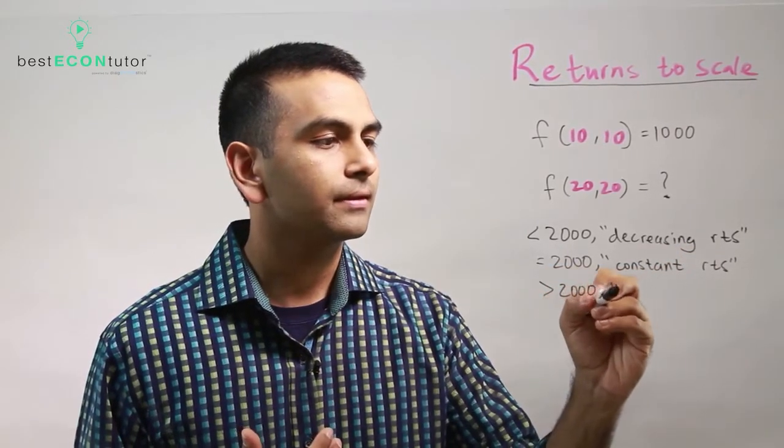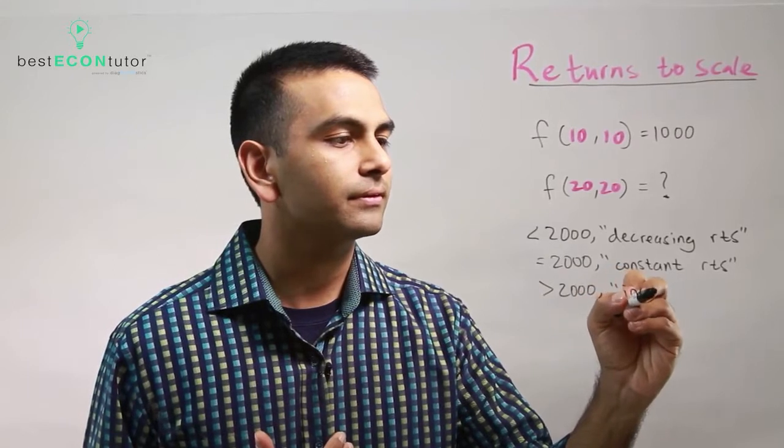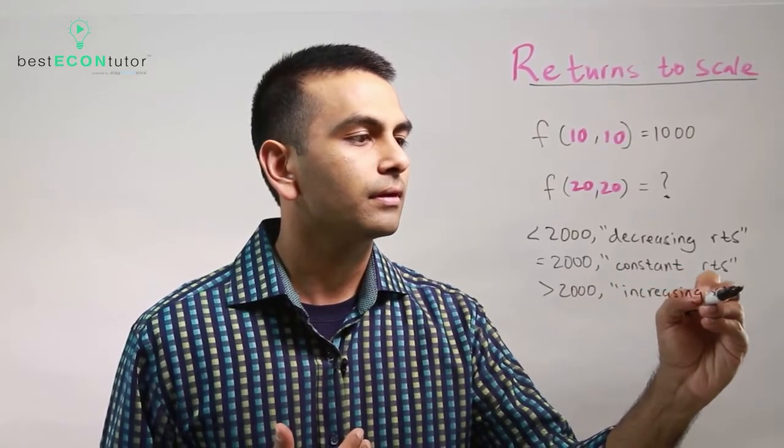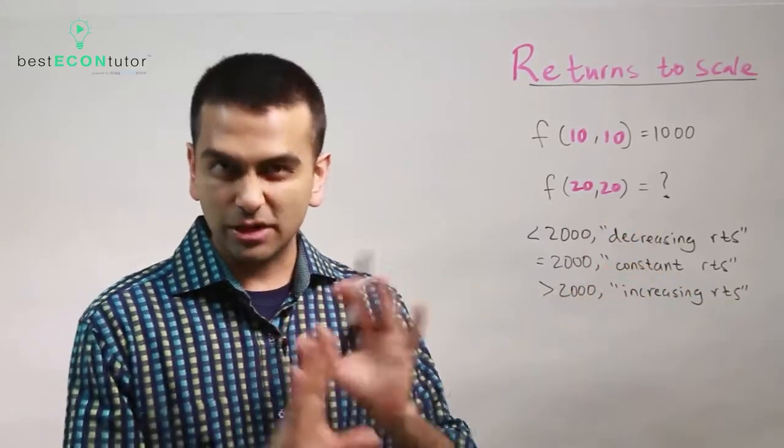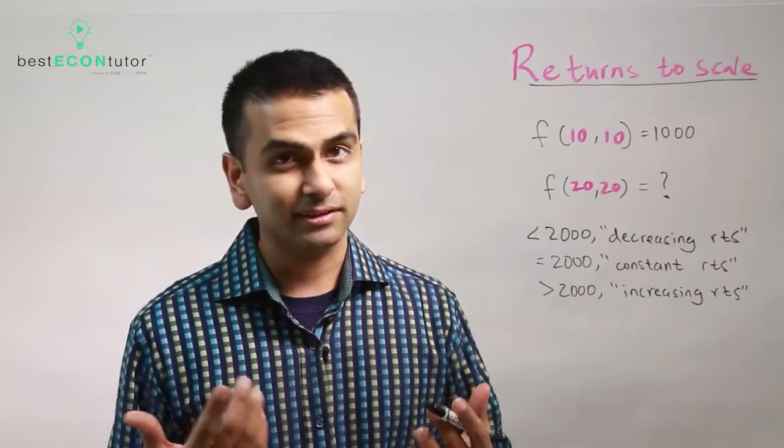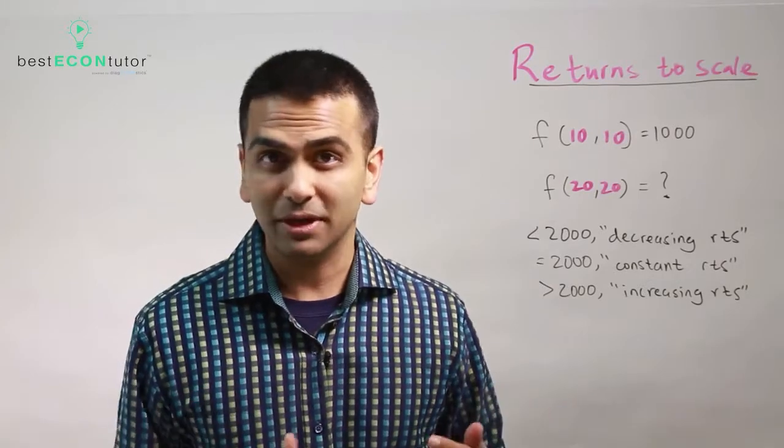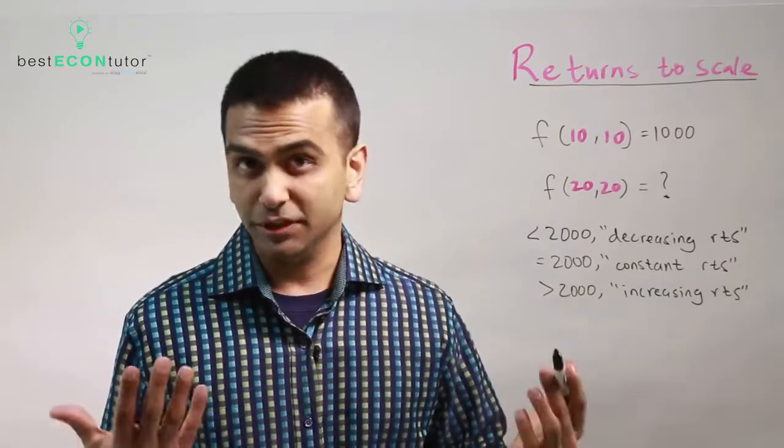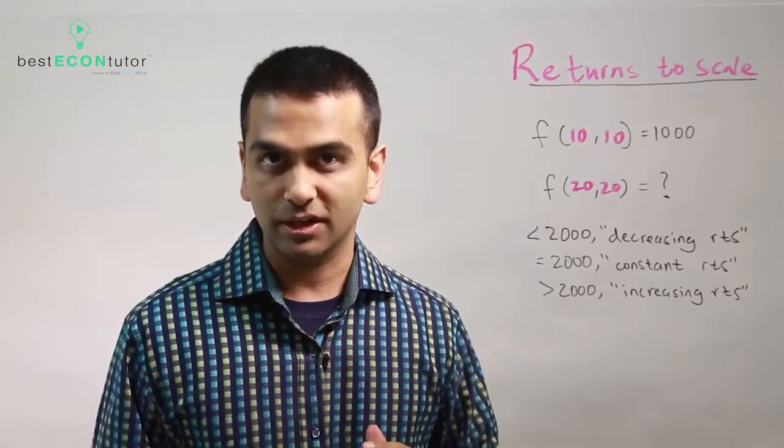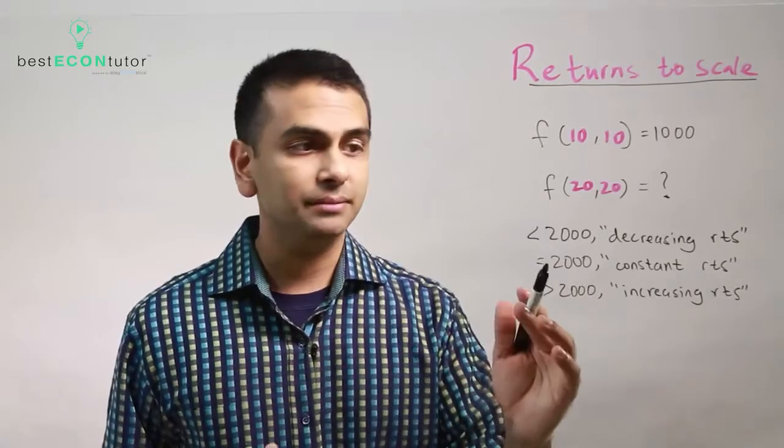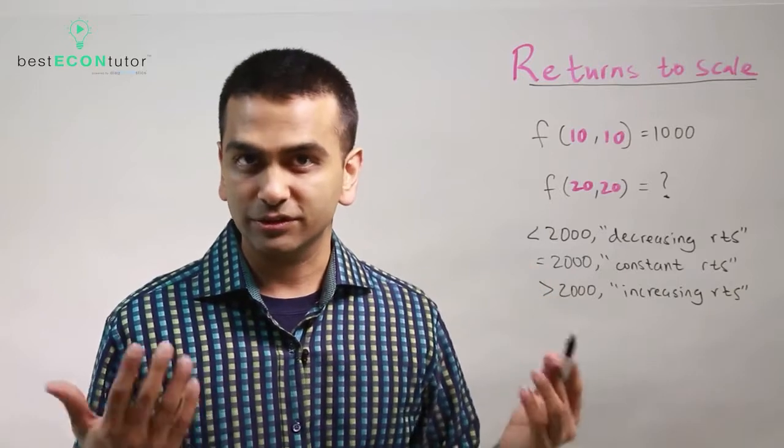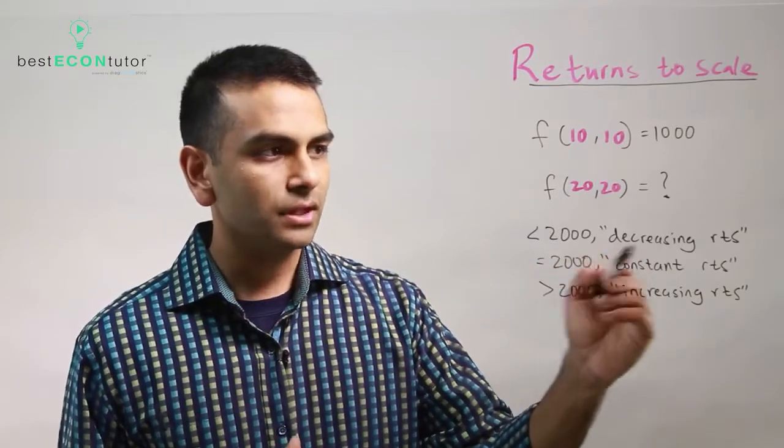Finally, if it's more than 2,000, that's increasing returns to scale. To generalize: if you were to double all inputs (technically you can triple or whatever), if you more than double your output, that's increasing returns to scale. If you exactly double it, that's constant. If you less than double your output, that's decreasing returns to scale.